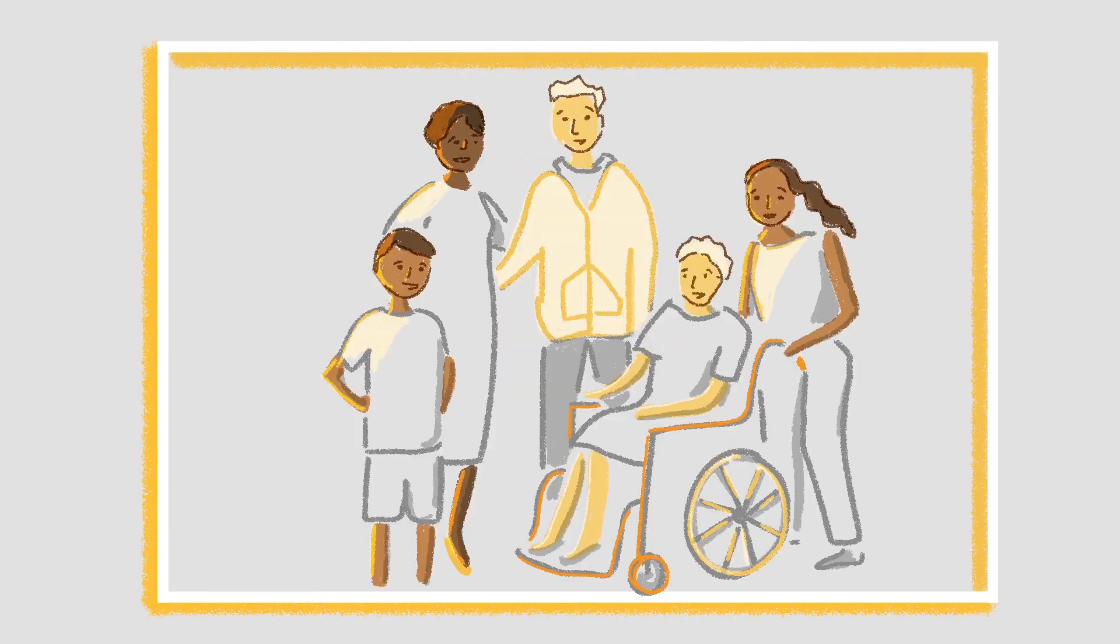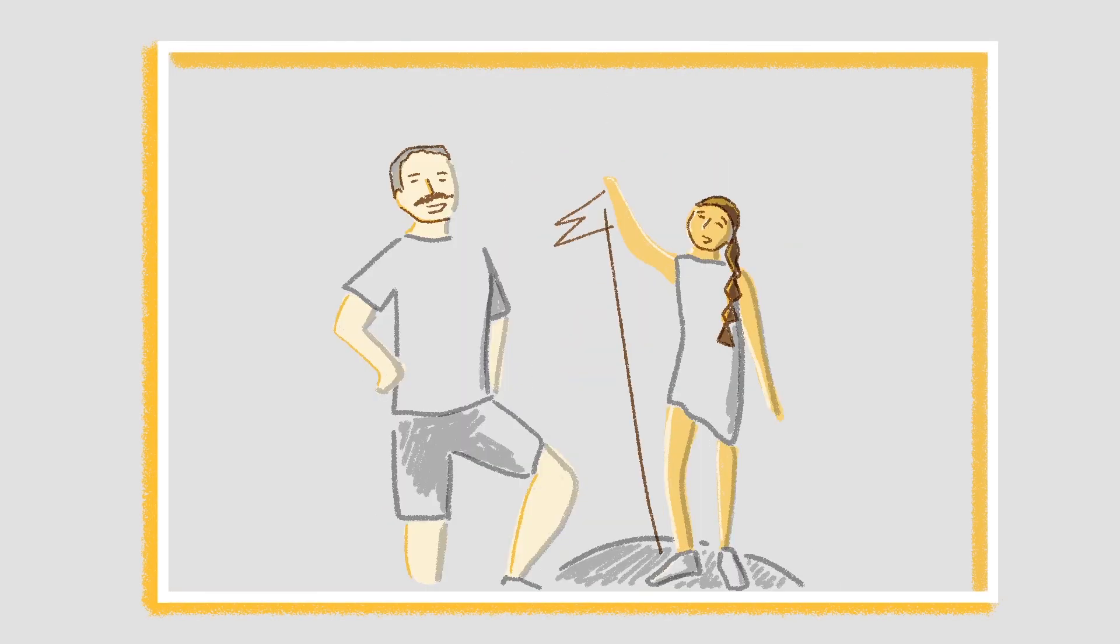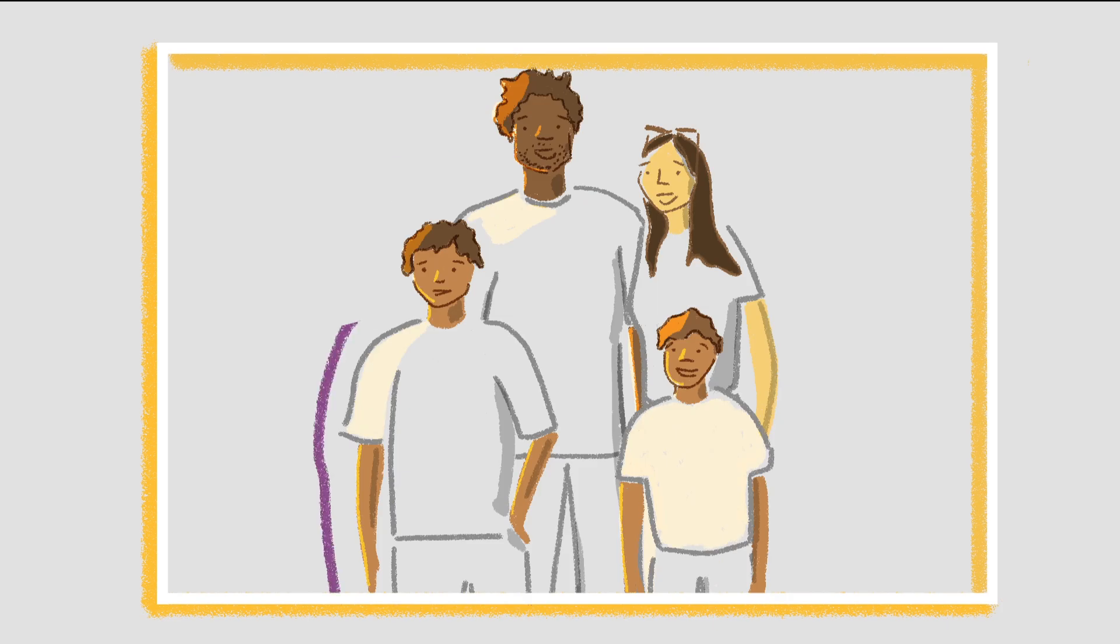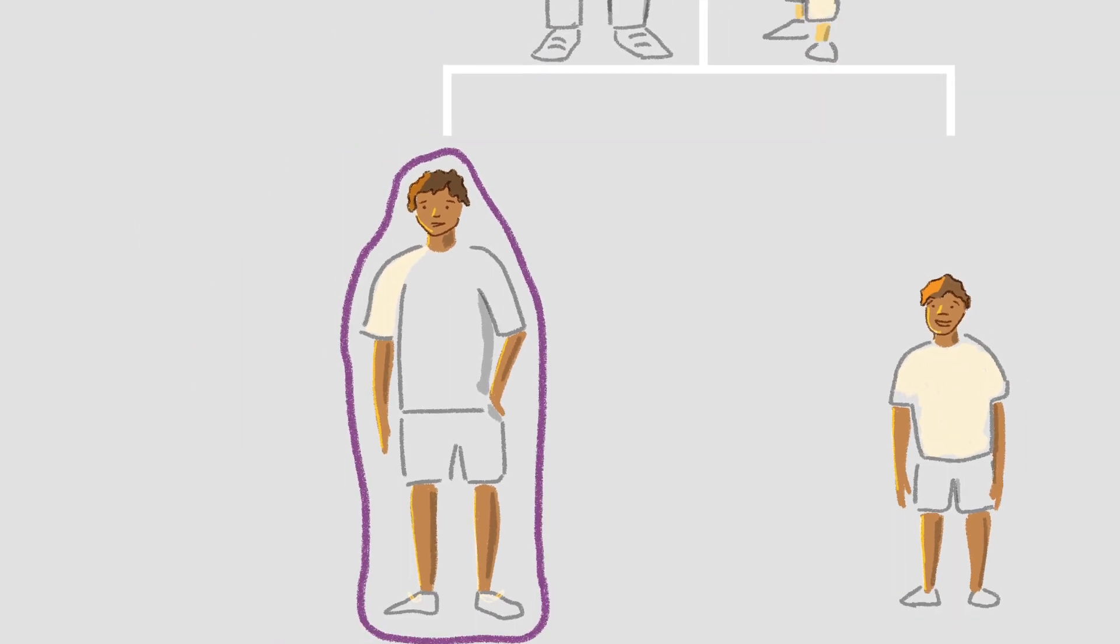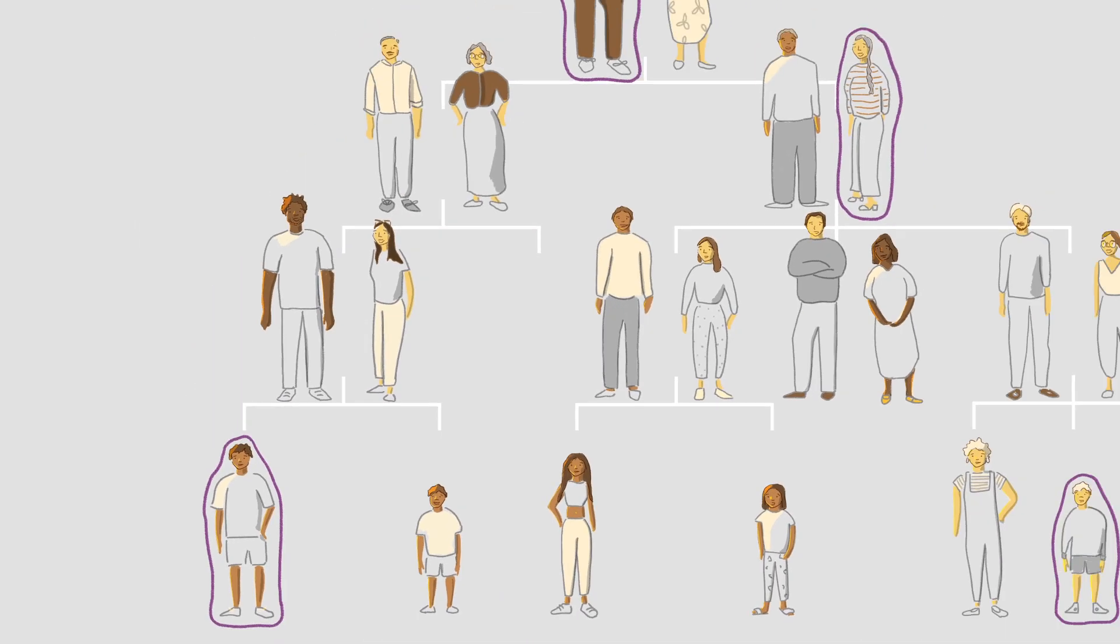Autism is a common neurodevelopmental condition that runs in families. If one person in a family is autistic, the chance that their child, brother or parent is autistic is about 10 times higher than for an unrelated individual.